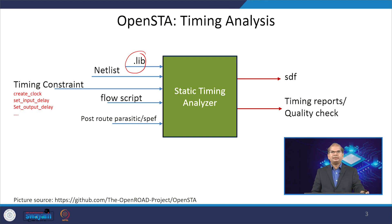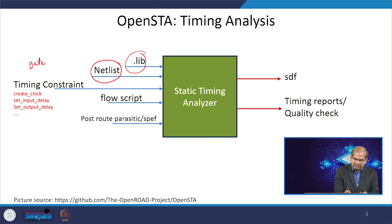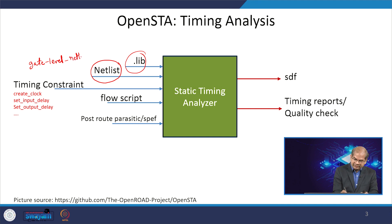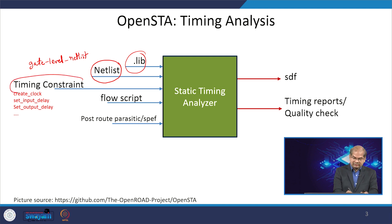The second input to the Static Timing Analysis Tool is the netlist. This netlist may come from the logic synthesis tool as a gate level netlist, or it can come from the physical synthesis tool which also contains parasitic information. That is the second input to your Static Timing Analysis.